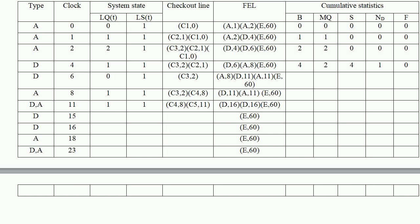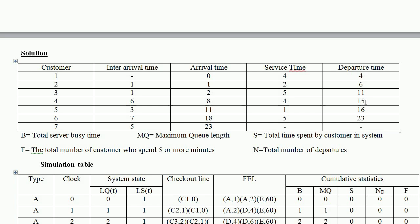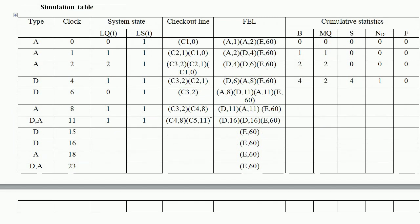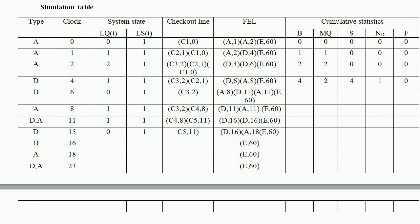At clock time 15, customer 4 departs. Customer 5 is now at the checkout line getting service (arrived at minute 11). Ls=1, Lq=0. The future event list contains departure of customer 5 at minute 16 (D16) and arrival of customer 6 at minute 18 (A18).